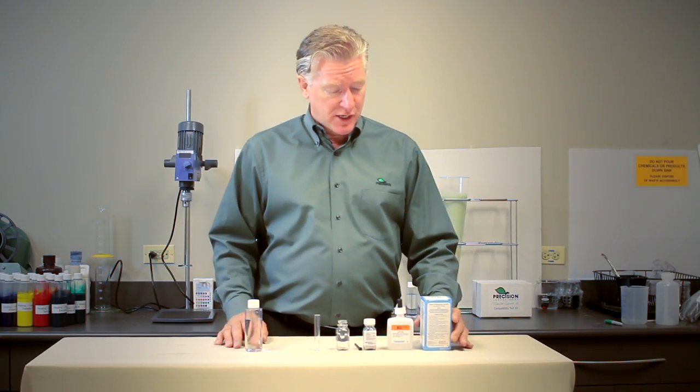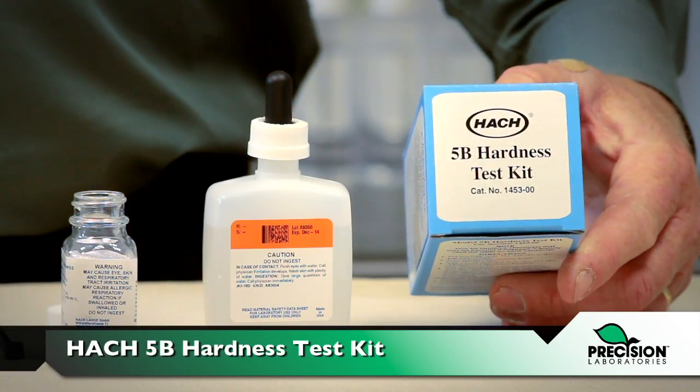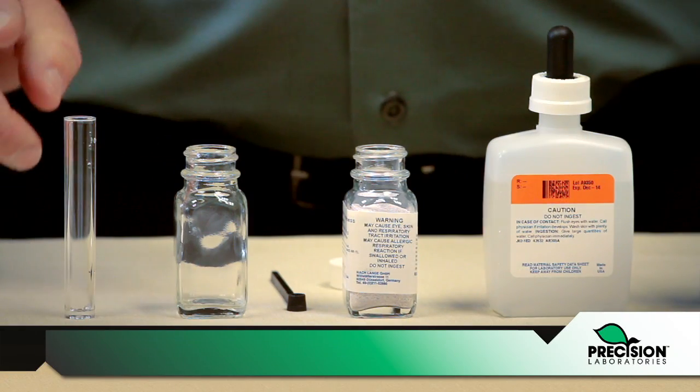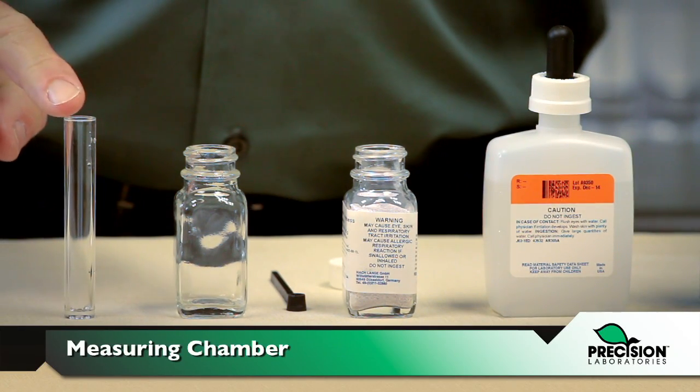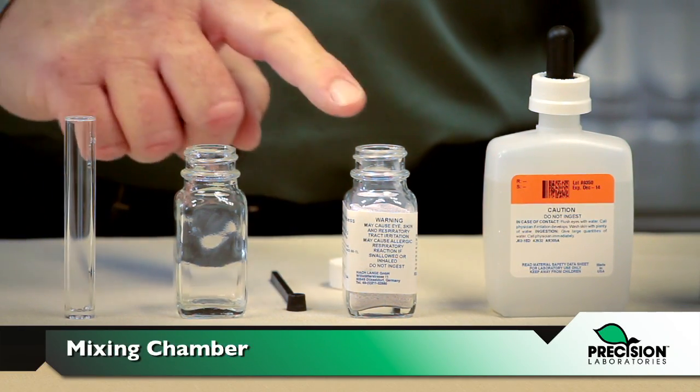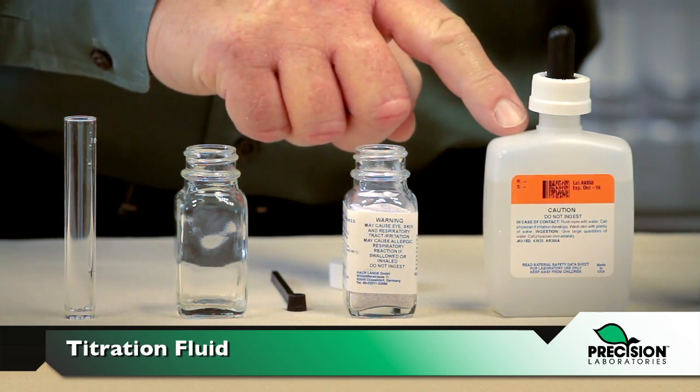A simple way to do a water hardness test is by using a HOC 5B water hardness test kit. It consists of a measuring chamber, a mixing chamber, a reagent, and a titration fluid.